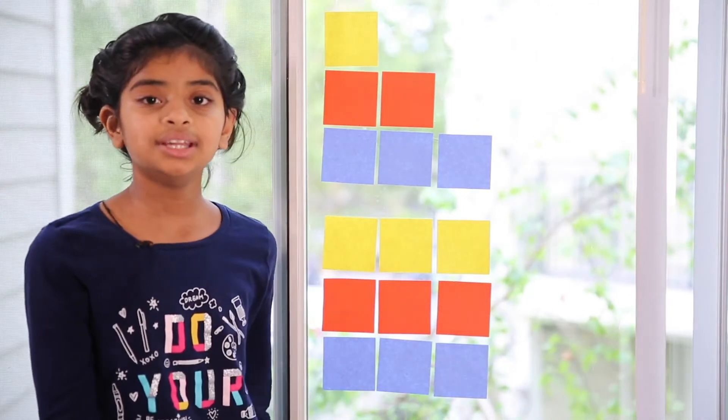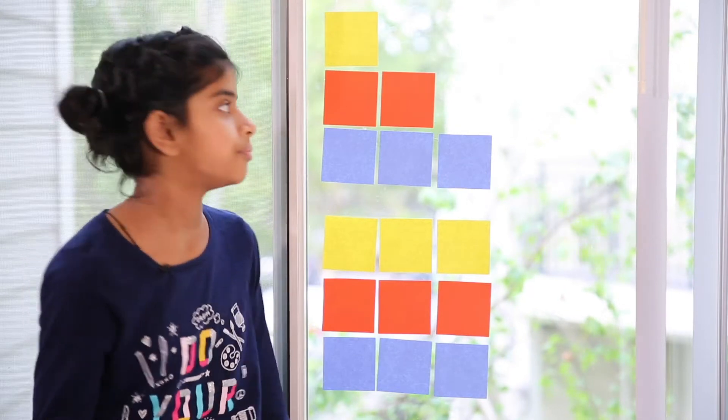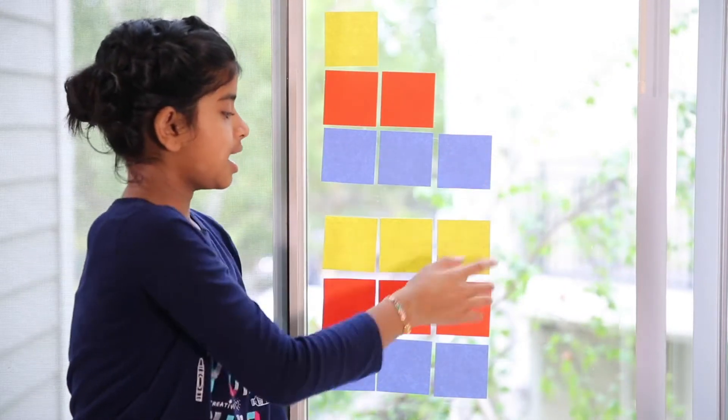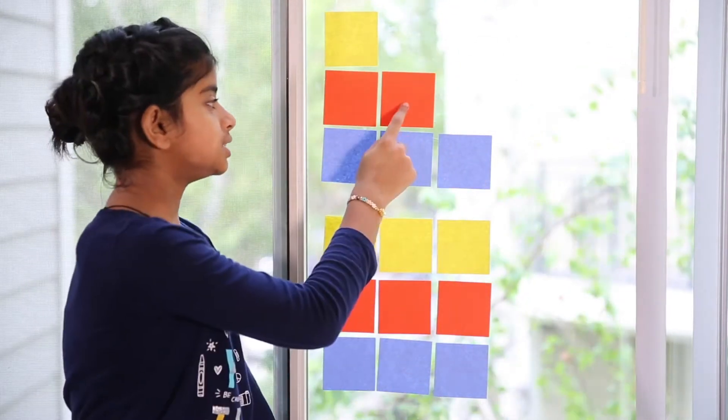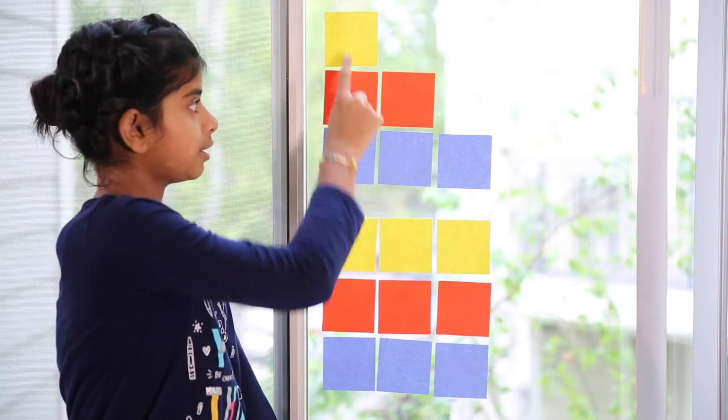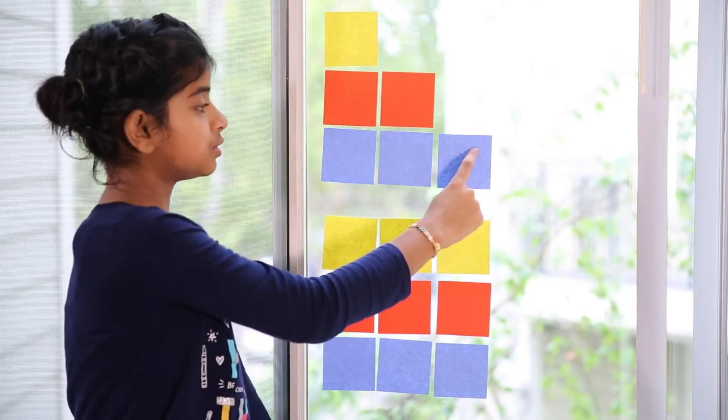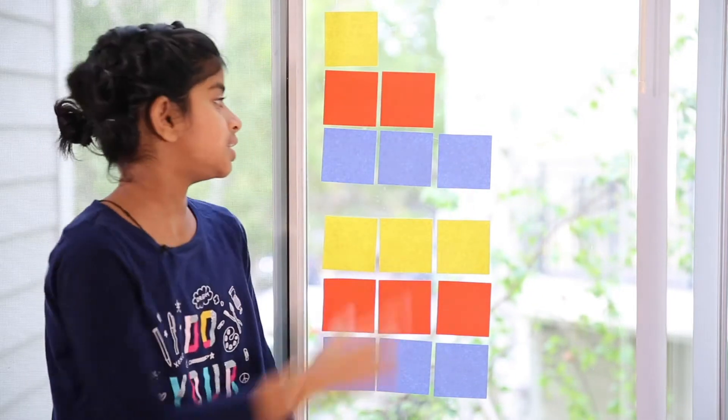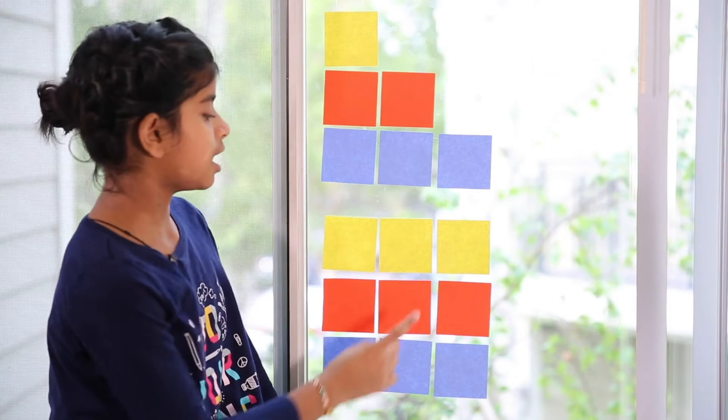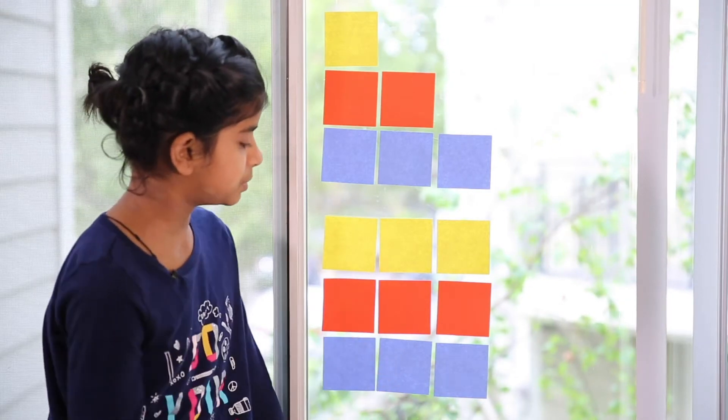Now let's count the number of sticky notes in each shape. Shape number 1 and shape number 2. So let's count shape number 1 first. 1 plus 2 is 3. 3 plus 3 is 6. So there are 6 sticky notes in this shape. Now moving on to shape number 2.